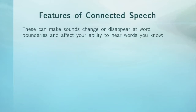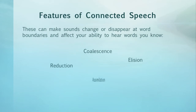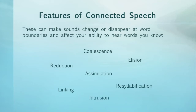Some features of connected speech that can make sounds change or disappear at word boundaries and affect your ability to hear words you know are: coalescence, elision, reduction, assimilation, re-syllabification, linking, and intrusion. Don't worry, I'll explain what each of these means in this series.